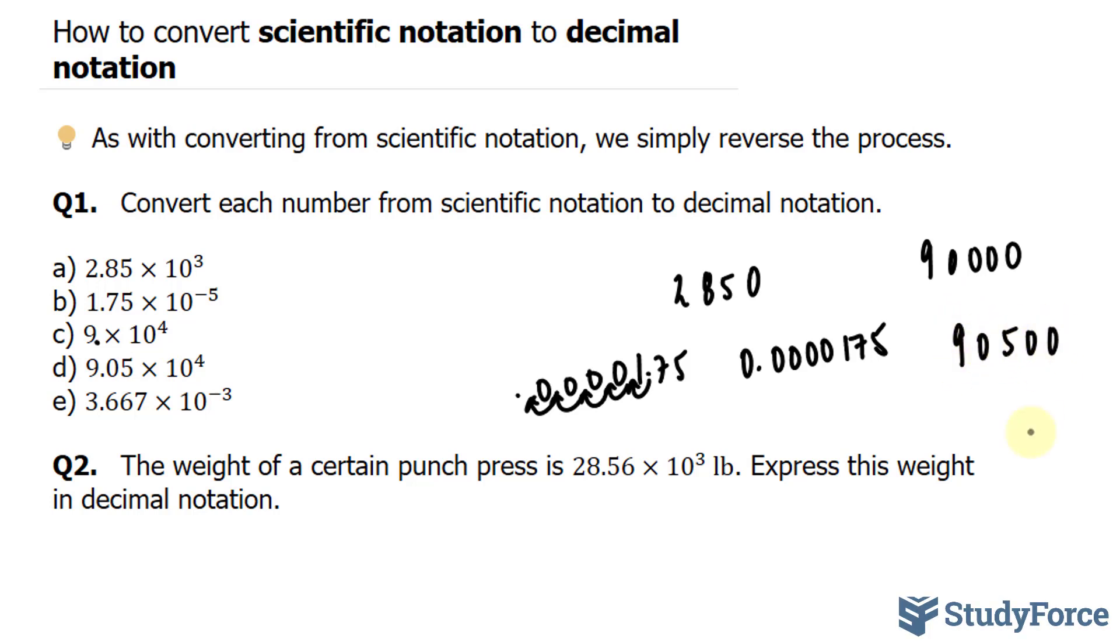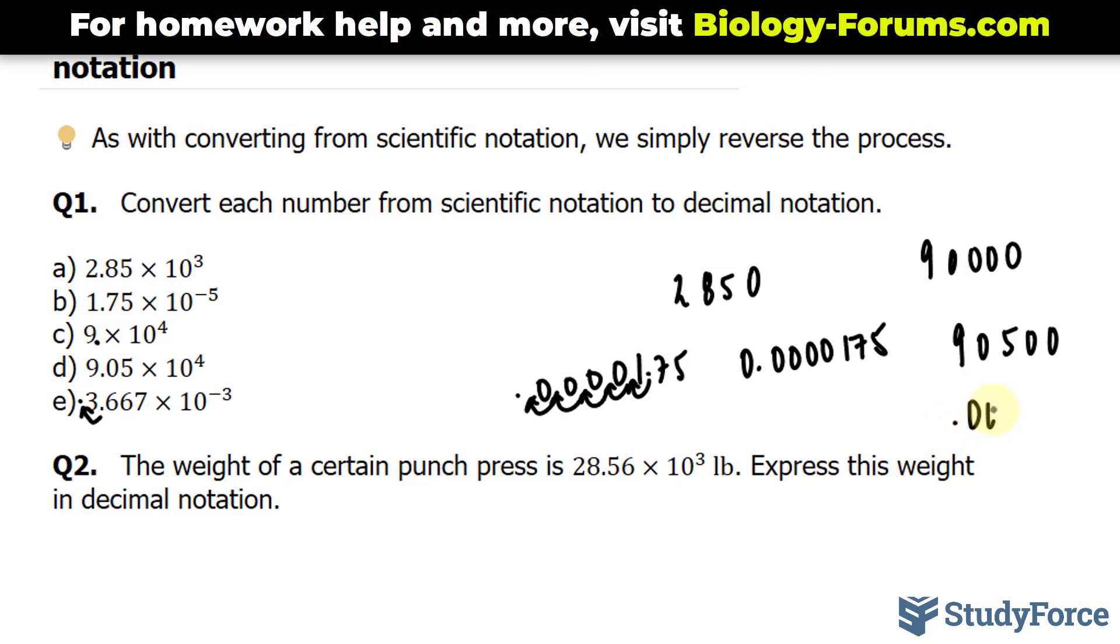And in question E we have this integer that's negative. That means we move to the left. Moving this once to the left puts the decimal place in front of the 3, and then 2 more times means that we have 0.003667. Also put that 0 at the front.